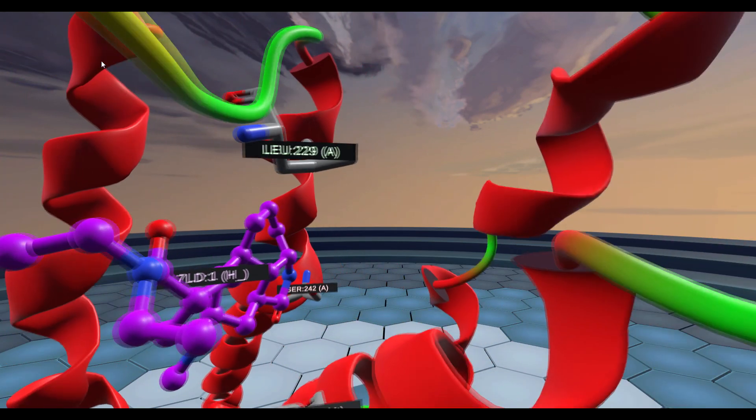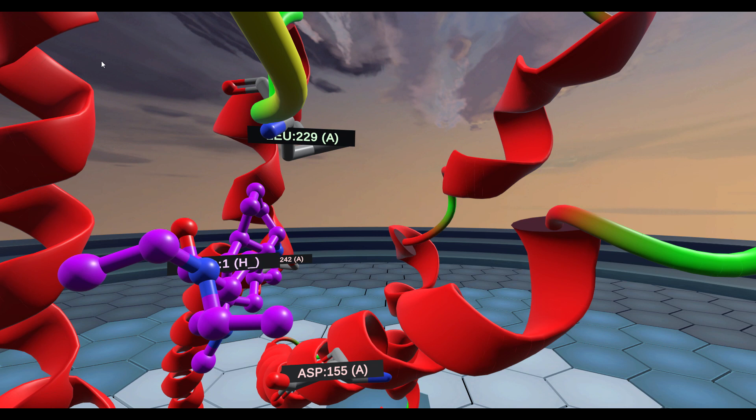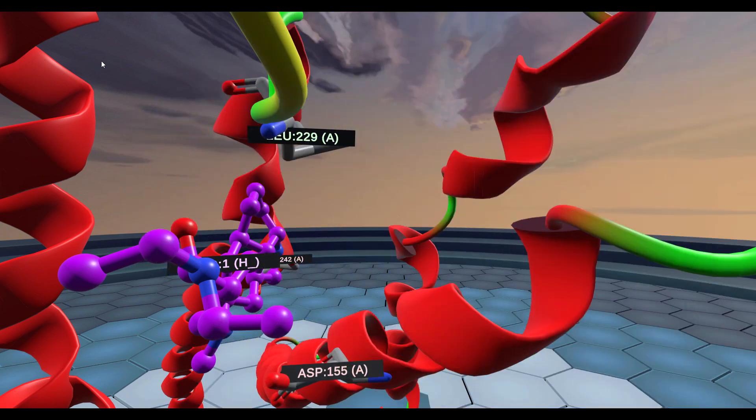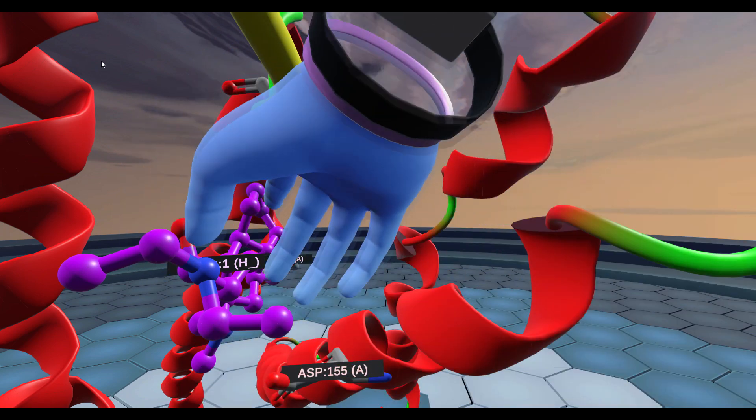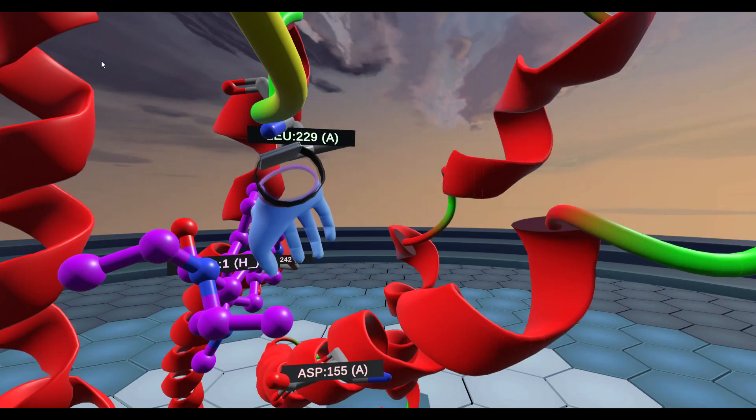Let's turn it so we can see the leucine 229 like that. What happens here is because leucine is a hydrophobic amino acid and LSD has lots of hydrophobic hydrocarbons, there are interactions called hydrophobic interactions between leucine 229 and LSD that hold it stably inside the receptor.